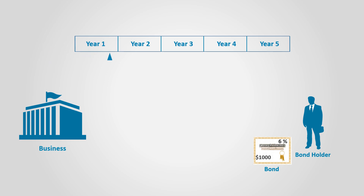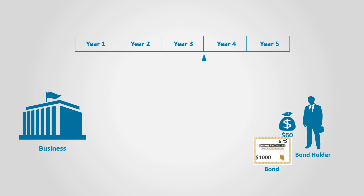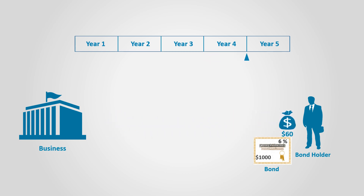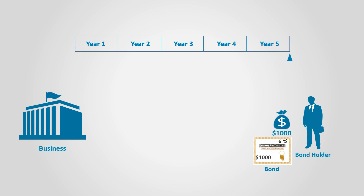At the end of year one, the bond holder receives interest of 6%, that is $60, and this is recurring for each of the five years of the bond's life. Then, at the end of the bond agreement, which we call maturity — which is the fifth year in our example — the business will return the principal amount of $1,000 back to the bond holder.